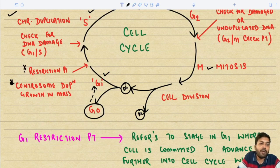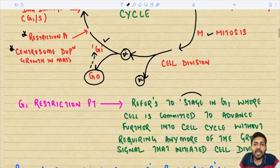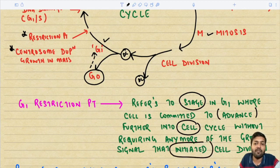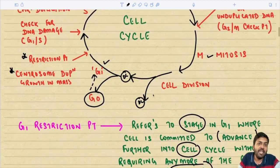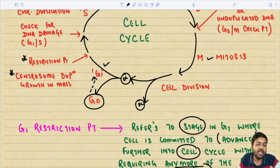The G1 restriction point refers to the stage in G1 where the cell is committed to advance further into the cell cycle without requiring any more of the growth signal that initiated cell division in the first place. After this restriction point, the cell becomes self-sufficient to carry out the replication process and does not require any more signals to continue.